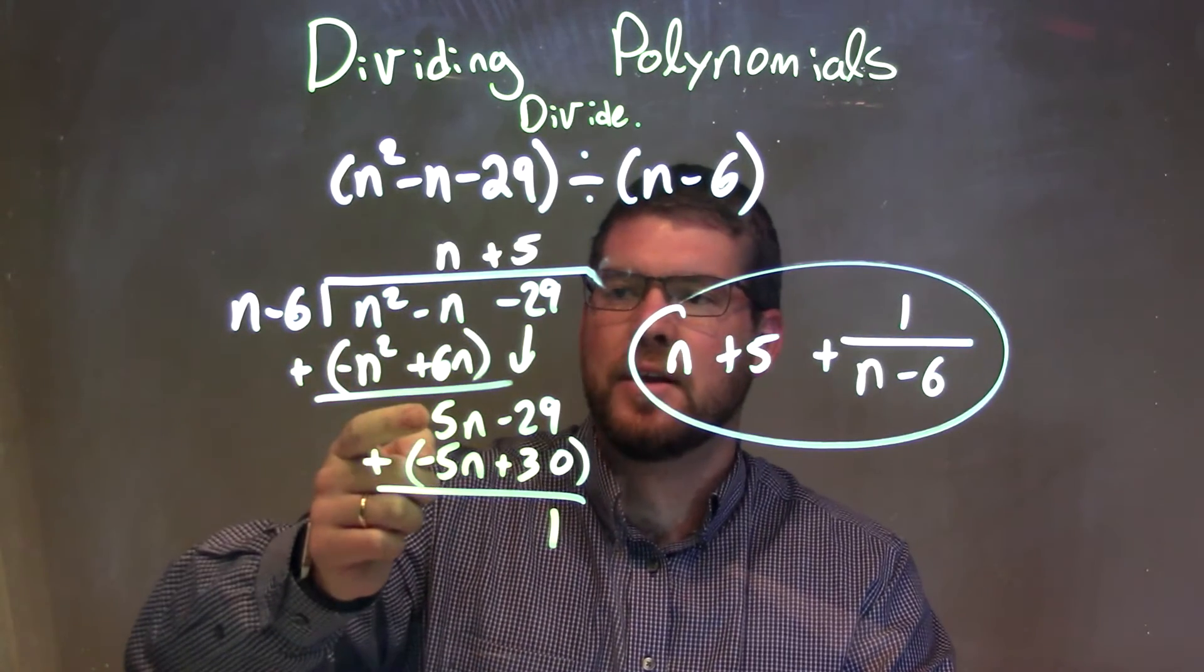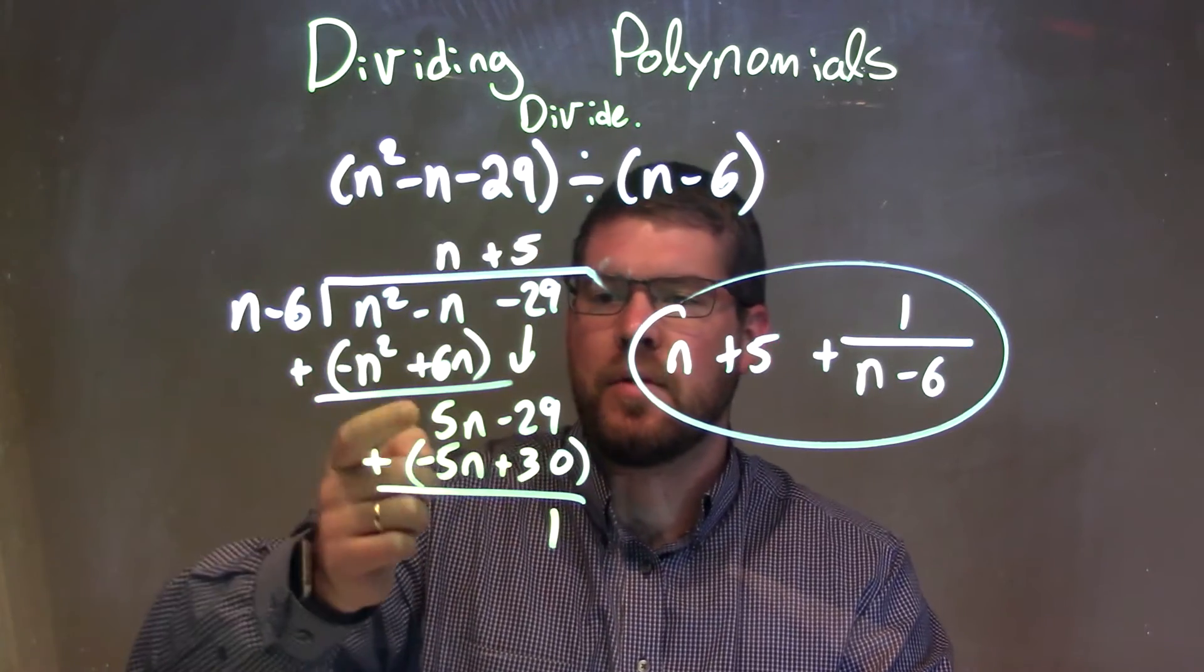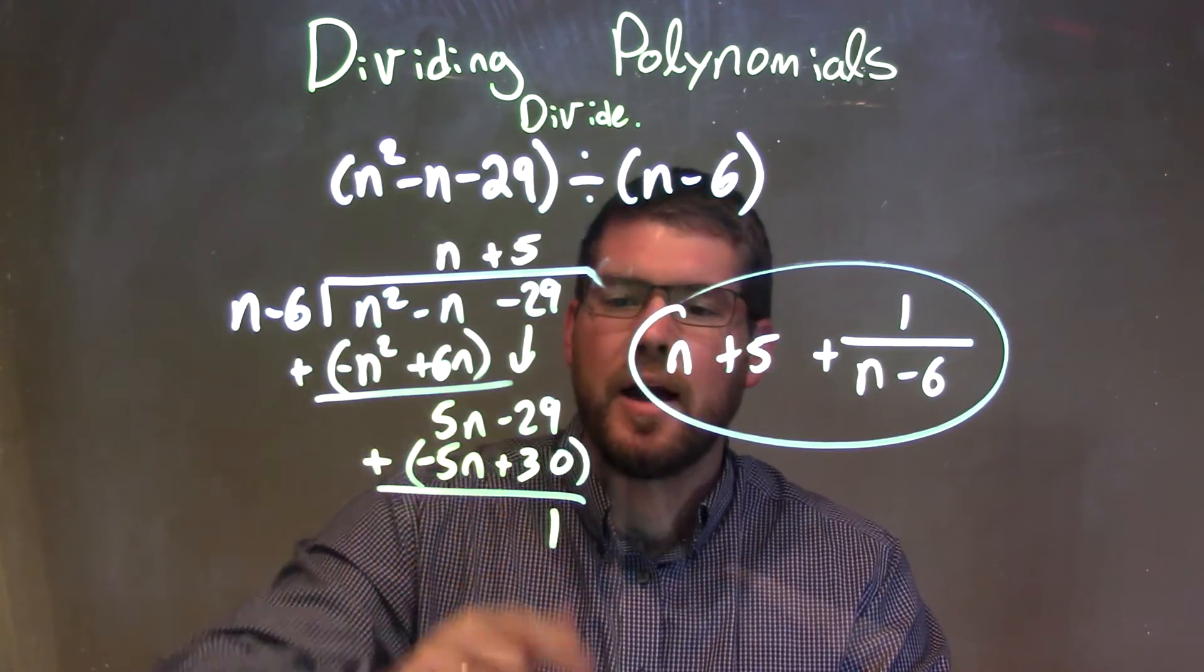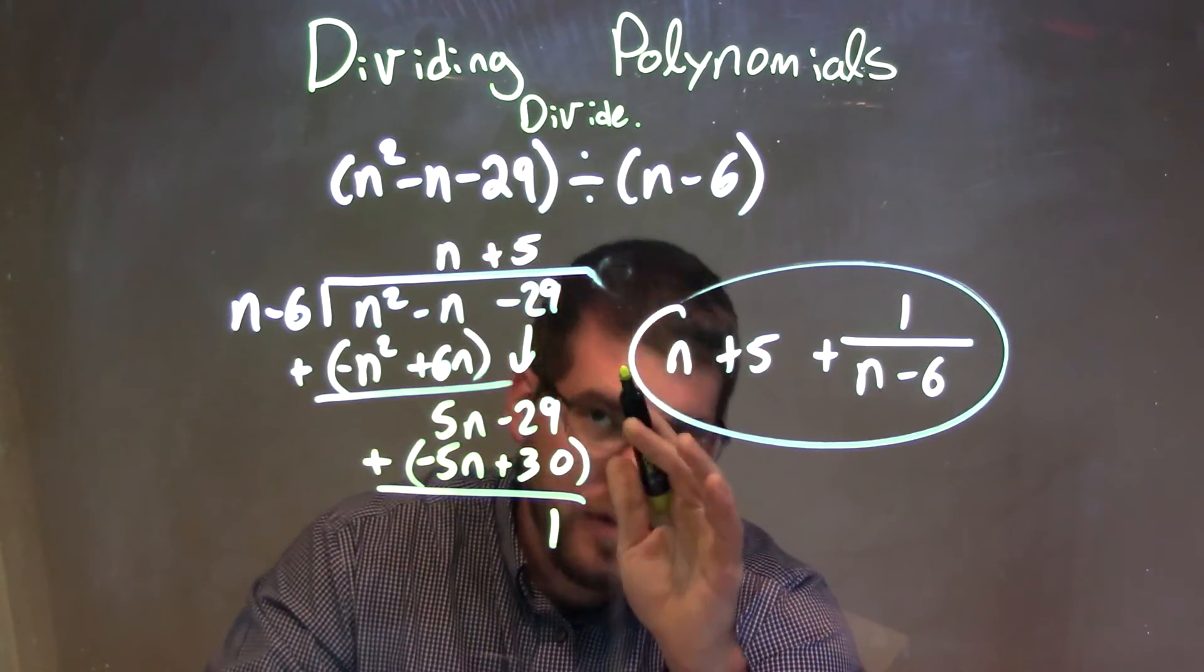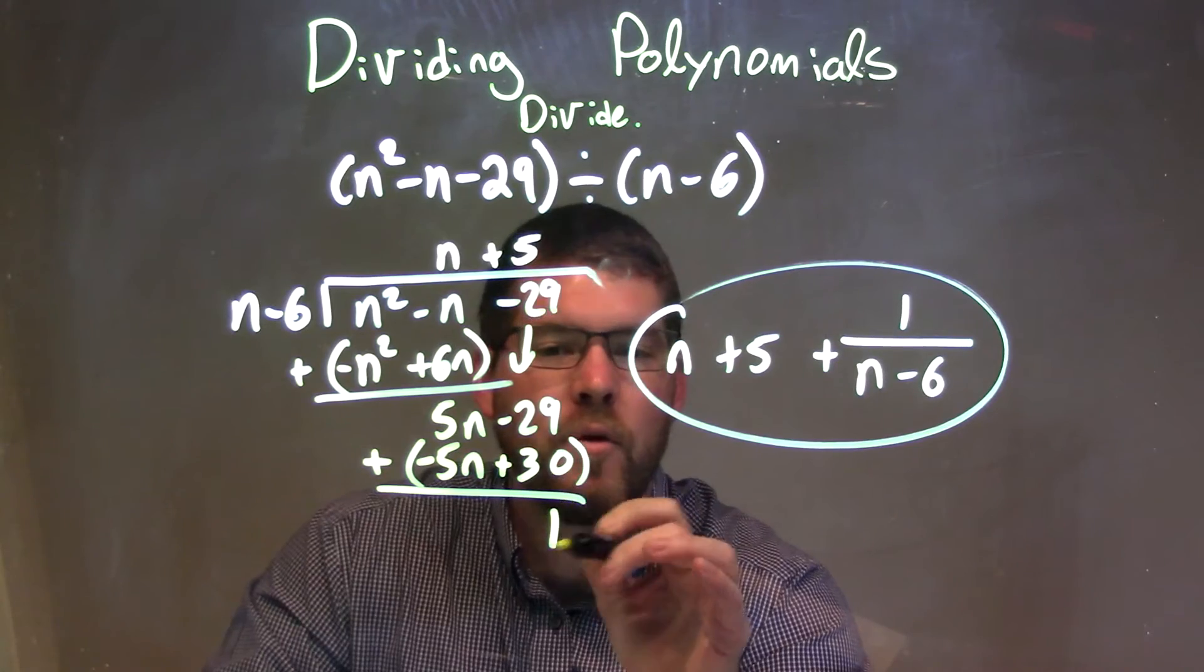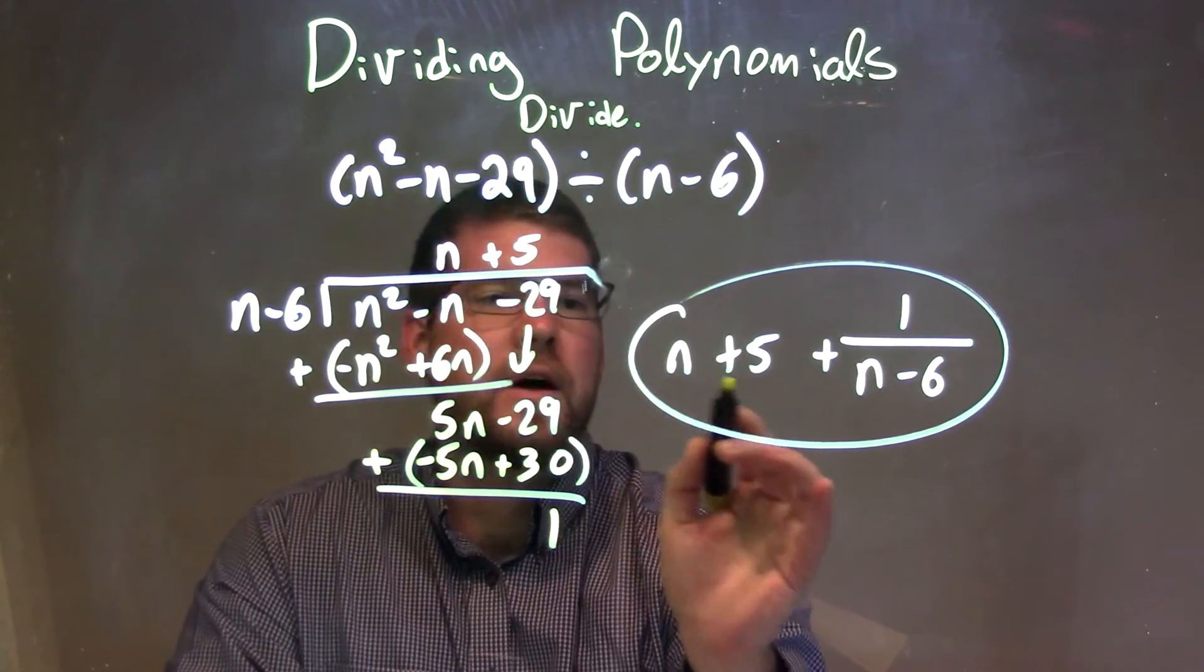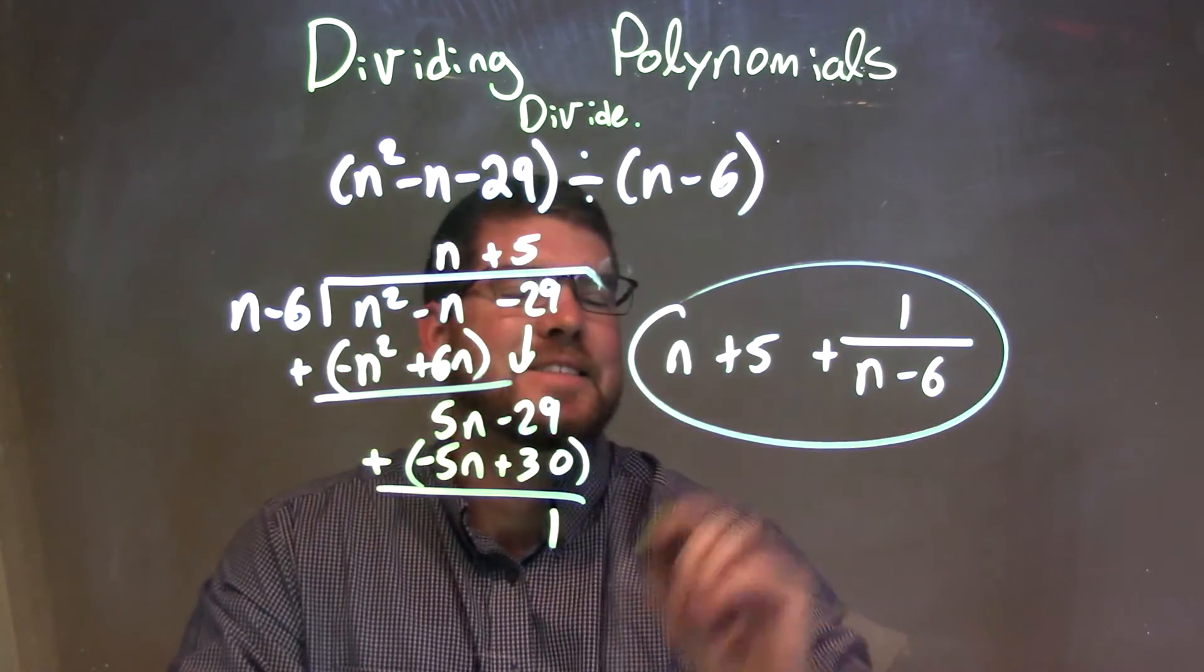Then we had 5n here. What times n gives me 5n? That was a positive 5. Do the same thing, multiply it out. Then we subtracted them, giving me a 1 as my final answer here, or a remainder after the dividing. So we have a remainder of 1. So then we just have our final answer up top: n plus 5, which is right there, plus 1 over n minus 6.